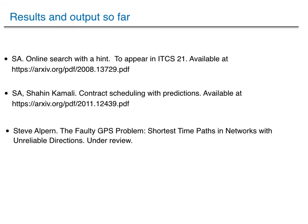So this is what we have done so far in this project. The first work deals with the setting I just described, and it will appear in the next Innovations in Theoretical Computer Science conference. The paper is available on archive. The second work, which is joint with Sain Kamali, deals with a scheduling problem in AI. These two problems, at first glance, may not seem related. However, it turns out they are very much related — noisy predictions for this problem are very useful for searching as well. Eventually, we would like to combine these two in one publication. There is also a third recent work by Steve Alpern.